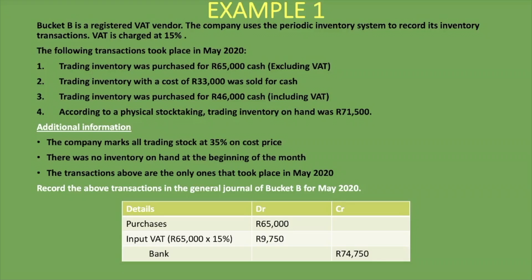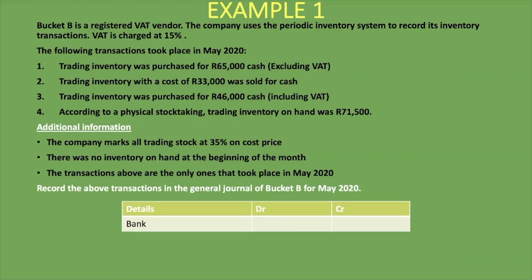Transaction two: trading inventory with a cost of R33,000 was sold for cash. Notice we are recording Purchases, not Trading Inventory — we only record inventory at the end of the period with the periodic system. Since we sold it for cash, we are receiving money, so our debit is Bank. The next question is: is this input VAT or output VAT? When we sell inventory we receive cash including VAT, and that VAT must still be paid to the revenue authority — so it's output VAT, a liability recorded on the credit side.